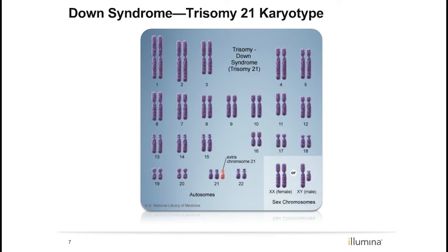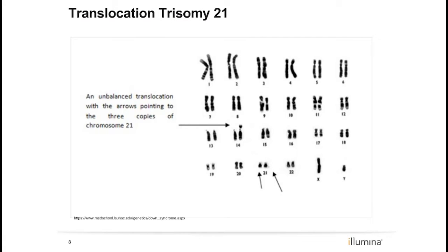This next karyotype depicts the chromosomes for an individual with Down syndrome, or trisomy 21. Note the extra copy of chromosome 21 that is present. This next karyotype also depicts chromosomes for an individual with Down syndrome; however, in this case, the extra copy of chromosome 21 is actually joined to or translocated onto another chromosome. A translocation between chromosomes 14 and 21 is present. The number of chromosomes is what is expected — 46 — however, because there is an additional copy of chromosome 21 present, this results in the same features as trisomy 21.